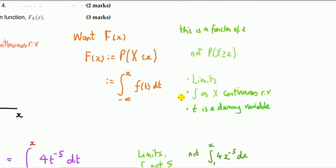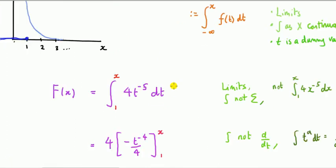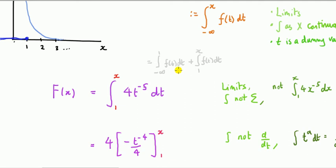Because this random variable X is continuous, I'm computing the area under the graph by integrating. If X were discrete, I would be summing instead. For this problem, the integral goes from one to x — not from minus infinity — because up to the point one the area is zero. You can write the part from minus infinity to one as zero explicitly, or just start the integral at one.